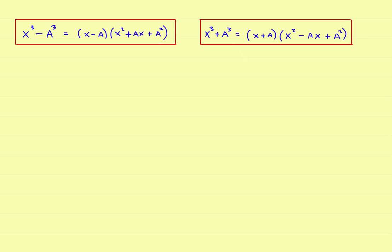For the first problem, we want to find the limit as x approaches two of x cubed minus eight divided by x minus two. Your first step, just like in the first video, is to go ahead and try to plug in the two. If you can plug in the two and it works, you're done. But in this case, if you plug two in the bottom, you've got two minus two — division by zero. So you've got to find some way to factor out that x minus two.